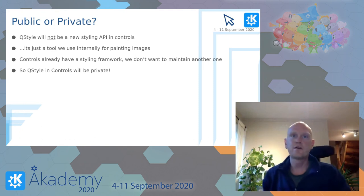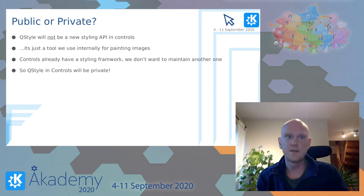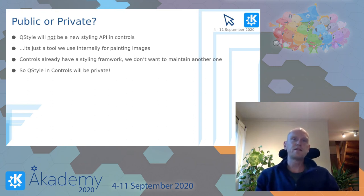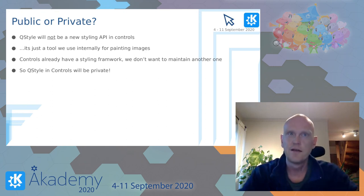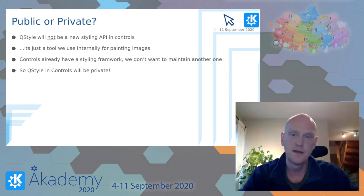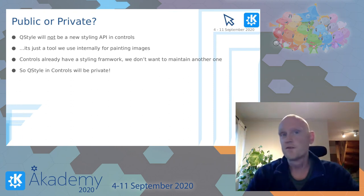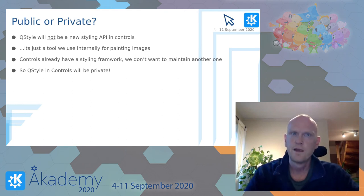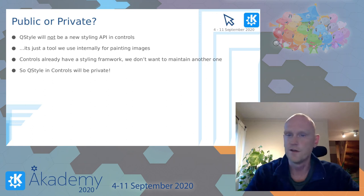As you might have noticed, we're not copying the Fusion style from widgets. Controls 2 already has a Fusion style, which is written in QML. We don't think QStyle is the best way to create styles for Controls 2 in general. It only makes sense when you need to use a native platform API to draw native controls and primitives onto images at runtime. On Mac OS, for example, we use AppKit to draw to key images. If you don't use any native APIs, you're actually better off drawing the images by other means or using QML directly, like the Fusion style does in Controls.